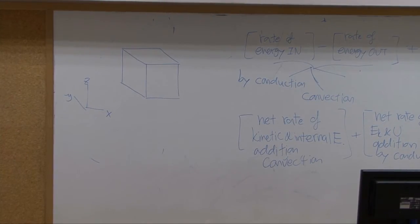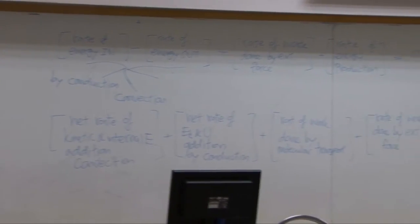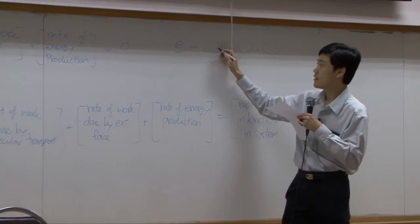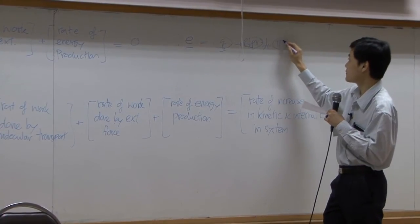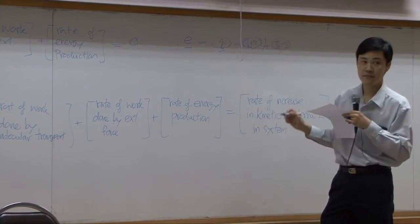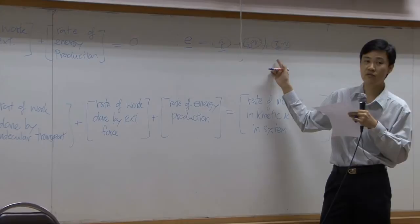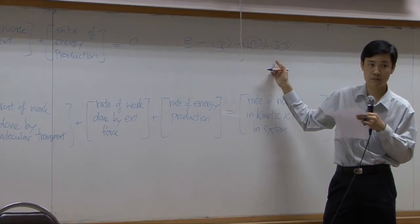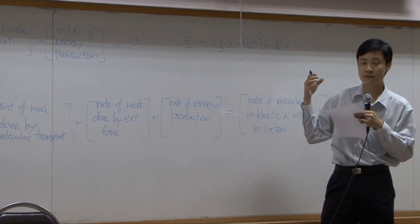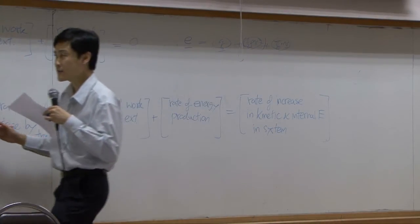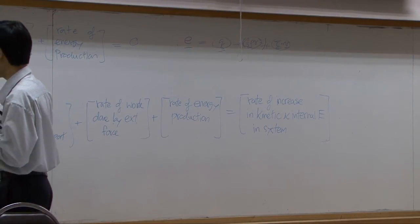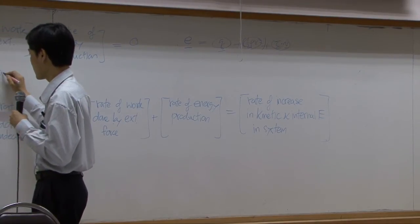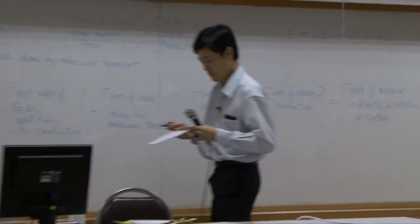The in and out term is supposed to be dealing with the vector e, right? E is consisting of three terms: conduction, convection, and work. Like, you have q, you have 1 over 2 rho v squared plus something, and then you have tau dot v. This is work. And in general, this is not a general work. This is what we call flow work. It's a work associated with the movement of the fluid. So the last term here is supposed to be work done by molecular transport.